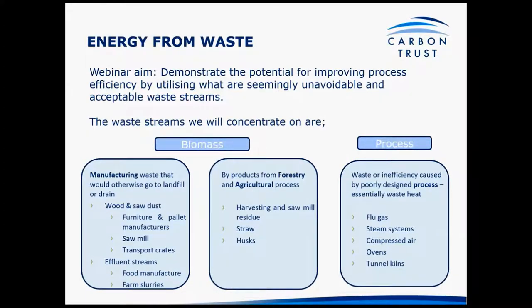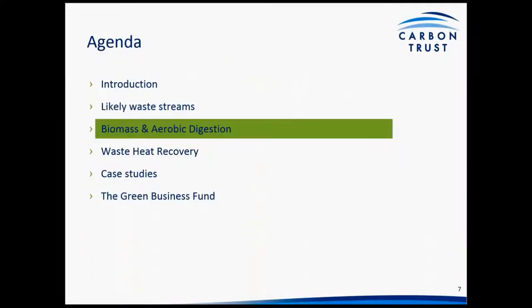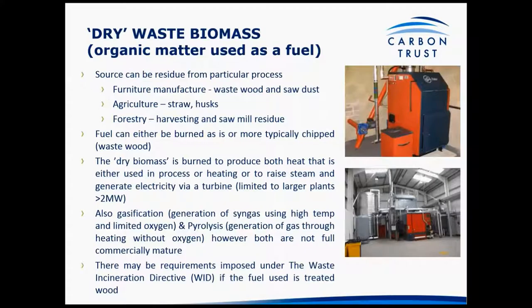Looking more specifically at processes, there are opportunities under flue gas streams, steam systems, waste heat from compressed air, and of course ovens and extracts from the likes of tunnel kilns. Those are the kinds of areas you want to think about in terms of where the opportunities are. We'll look in more detail at the opportunity for biomass first.